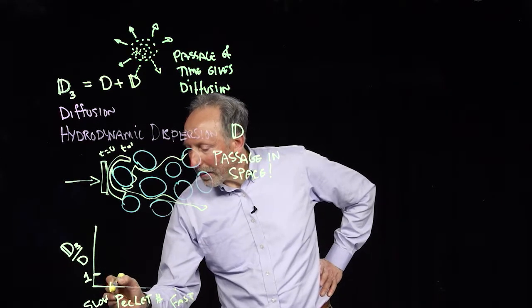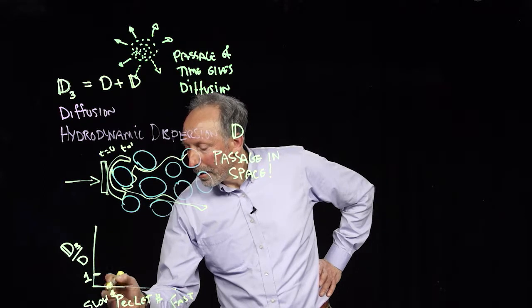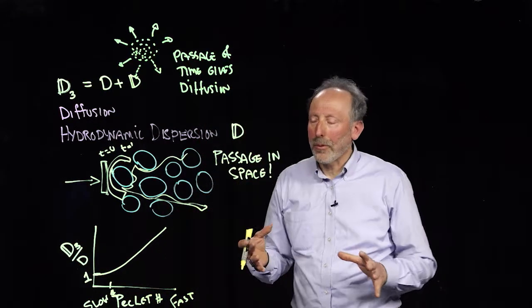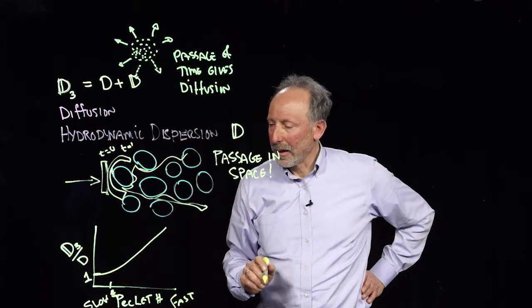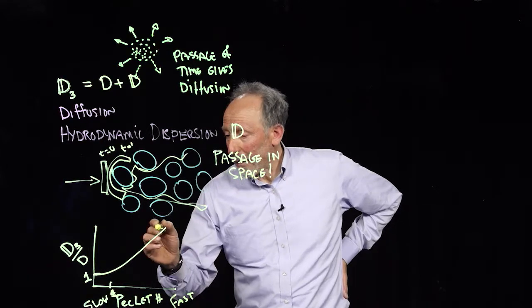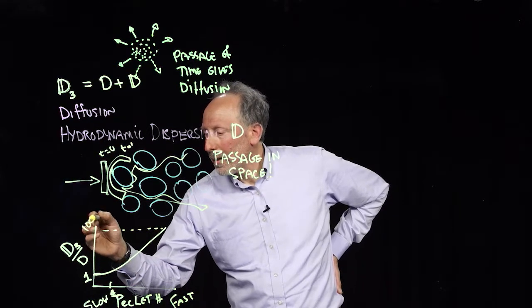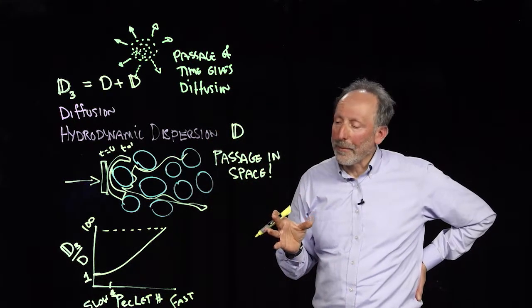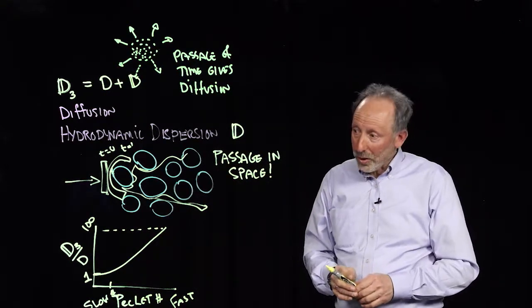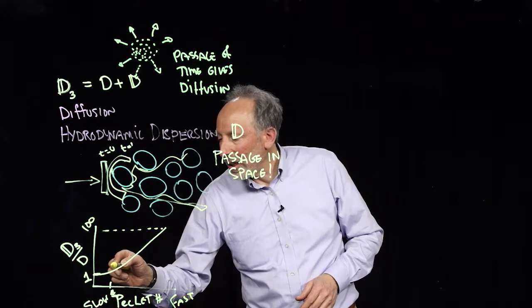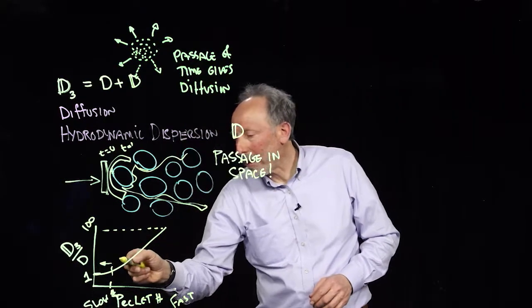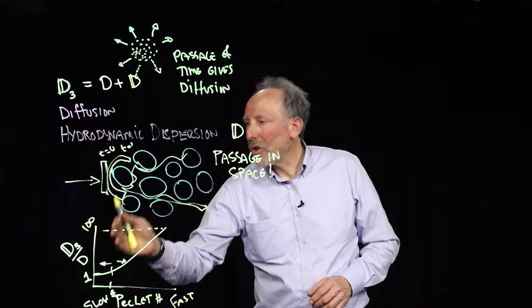And then as we cross a Peclet number of one, then this curve bends up, and we get more and more contribution to the spreading process due to the hydrodynamic processes. So a typical Peclet number curve will look like this. This can certainly get into values of hundreds times greater than diffusion or whatever. It can go really quite high. And so when we are solving the problem of moving solutes, we first have to really identify, are we in the low Peclet number where diffusion is the dominant process, or are we in the high Peclet number where we have to consider both diffusion and dispersion?